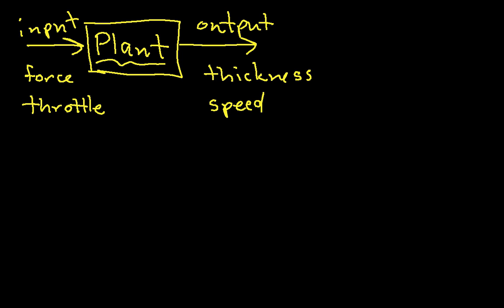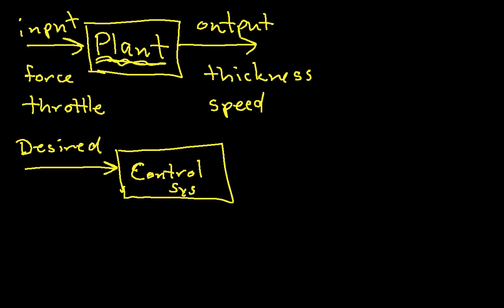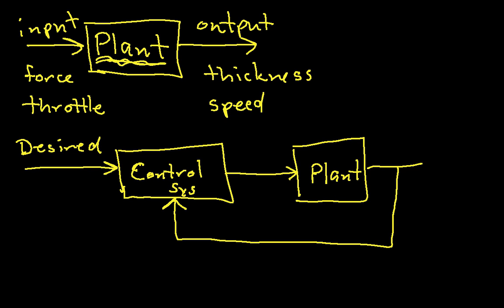So our goal is to get the output of the system to do something that we want it to do, but quite often we can't mess with something internal to the plant, so we add a control system. The way the control system works is that we have a desired value. It goes into our control system.